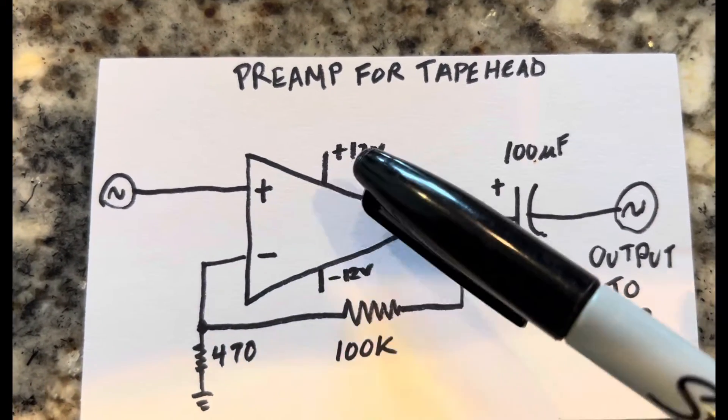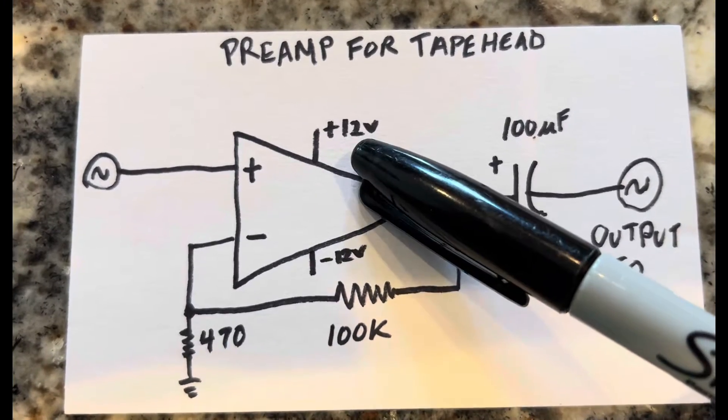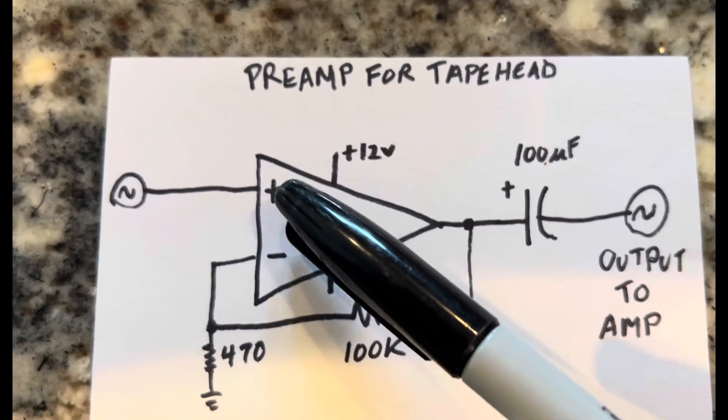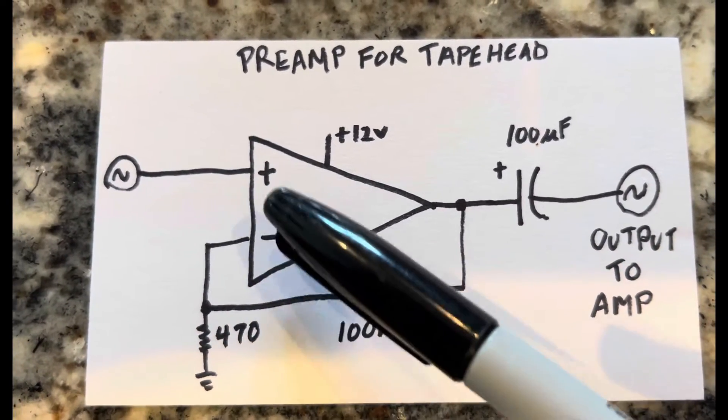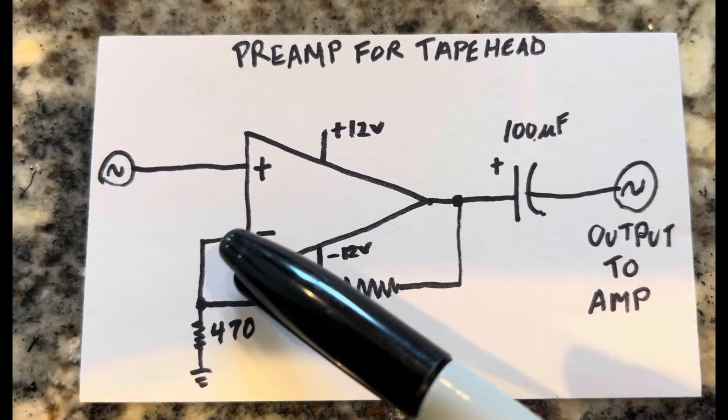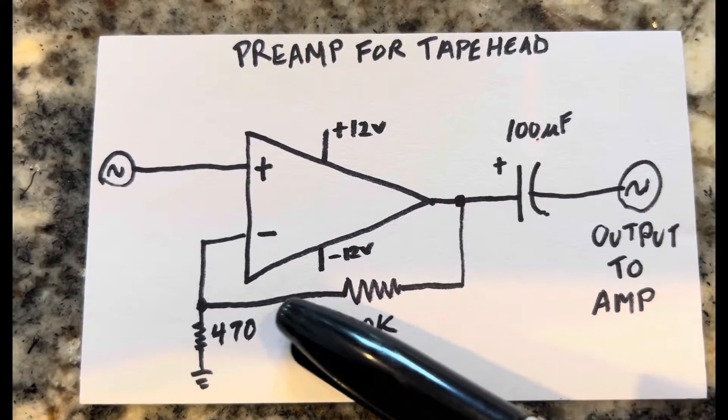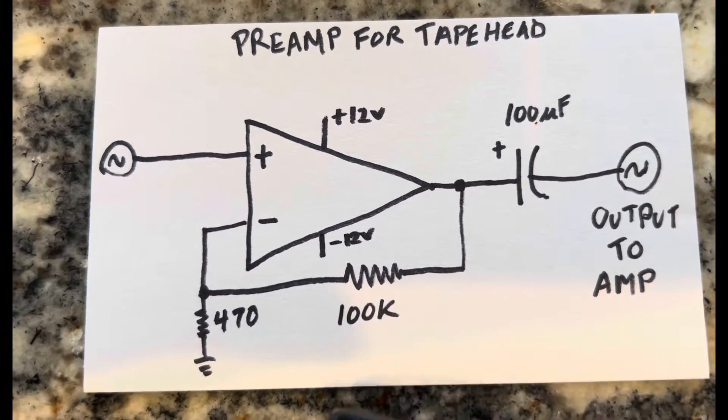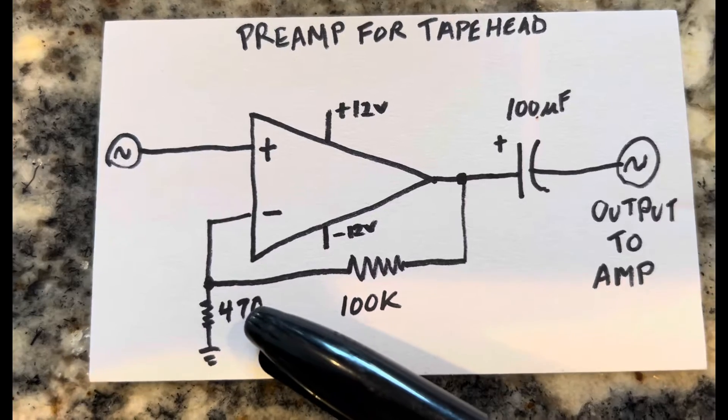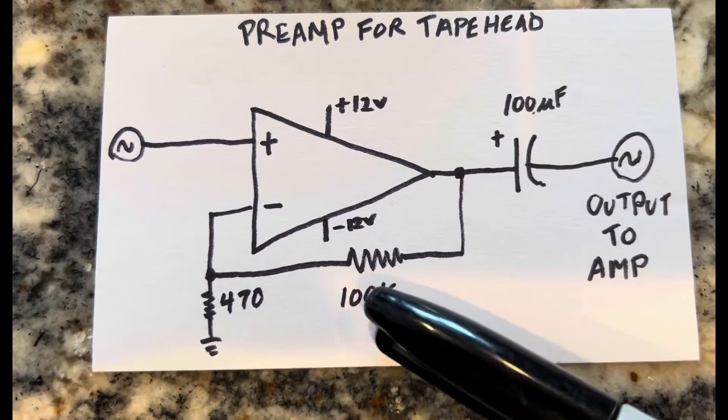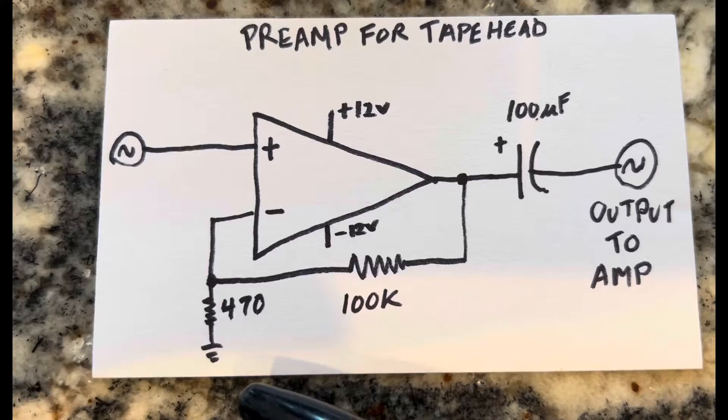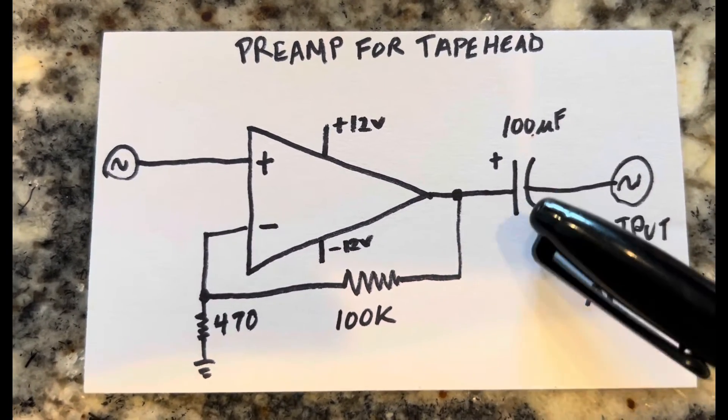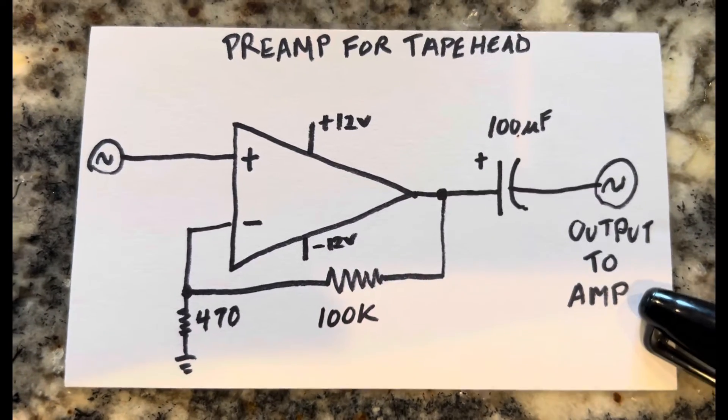So basically, I have the preamp is going to positive 12 volt and negative 12 volt, and then the input signal comes in here, and it goes into the non-inverting input. But there's a negative feedback loop here from the output to the inverting input with the 100k resistor and a voltage divider with the 470 to ground, and this gives you a gain of about 213 times. You put the output through a 100 microfarad capacitor, and that gets output to the amp.